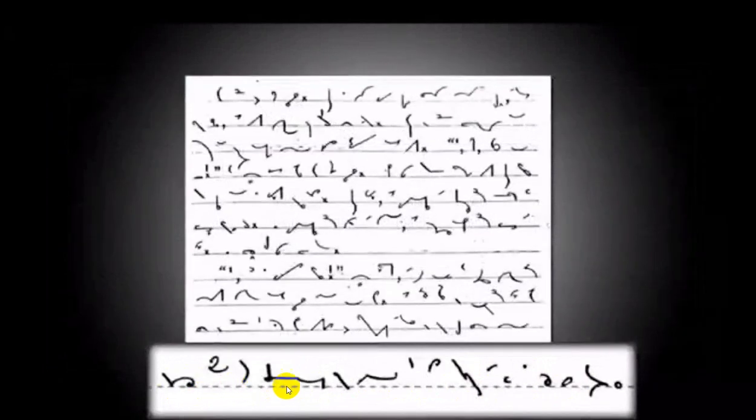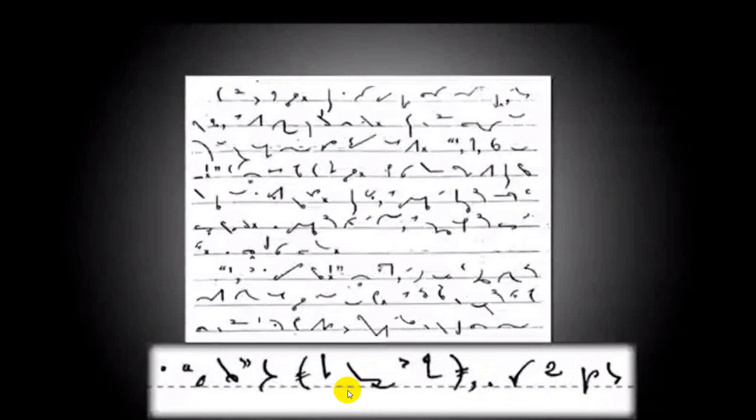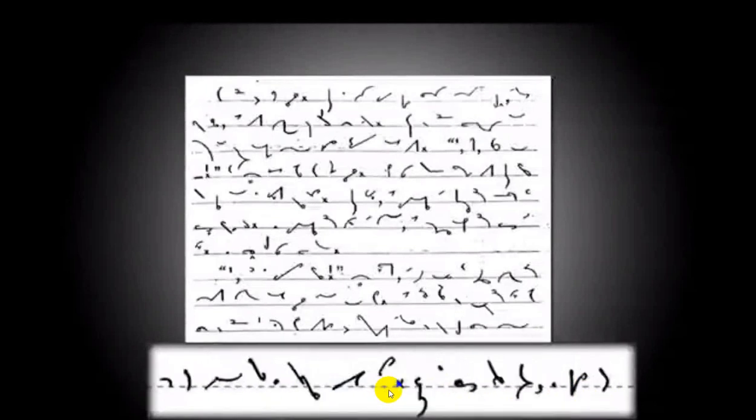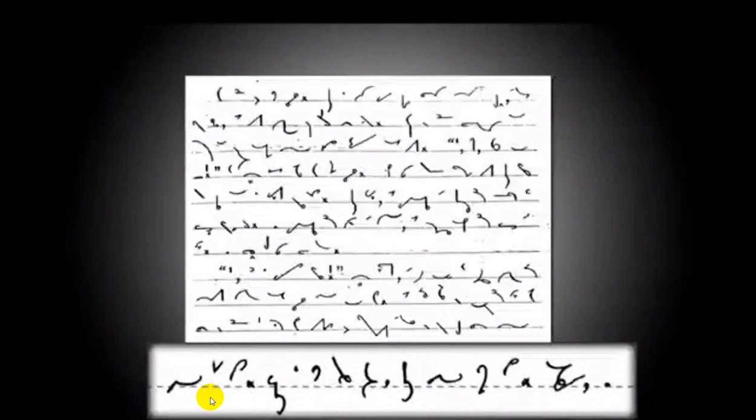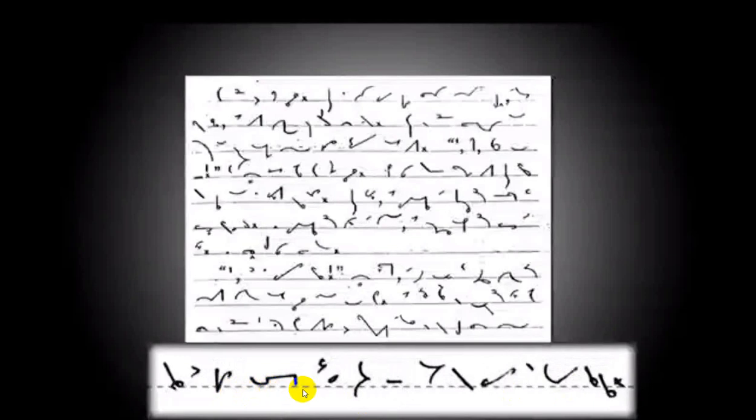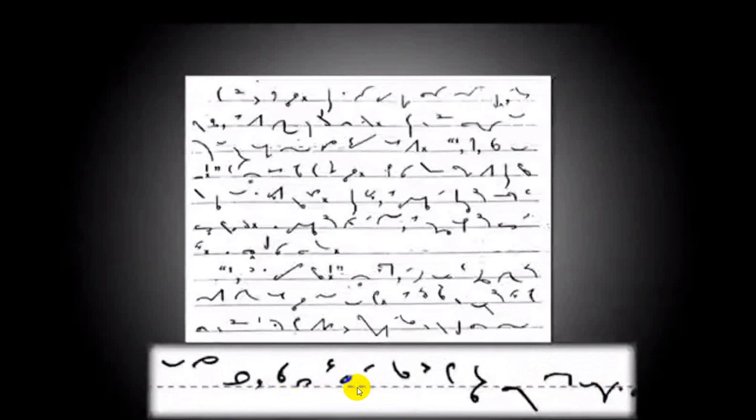Pitman's shorthand was designed to be written on lined paper. When a word's first vowel is a first position vowel at the beginning of the stroke, the whole shorthand outline for the word was written above the paper's ruled line. When it was a second position vowel, the outline was written on the line. When it was a third position vowel it was written through the line. In this way, the position of the outline indicated that the first vowel could only be one of four possibilities. In most cases, this meant that the first and often all the other vowels could be omitted entirely.